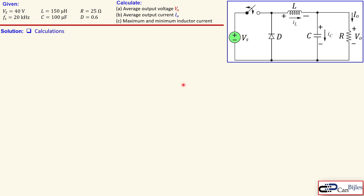Before we move on, we need to check the conduction mode — it could be continuous mode or discontinuous mode. Continuous mode means the inductor current is always above zero, so it's always positive. In discontinuous mode, the inductor current can reach zero and is forced to stay at zero before going to some positive value.